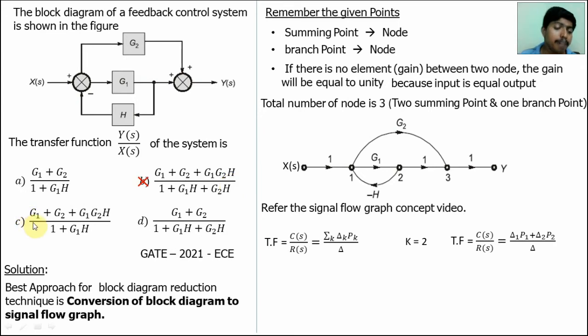In the option C, it will have numerator to have three terms. So option C also wrong. The answer may be option A or D.